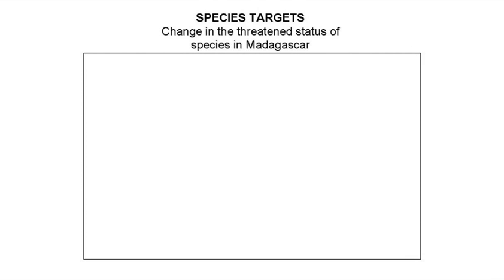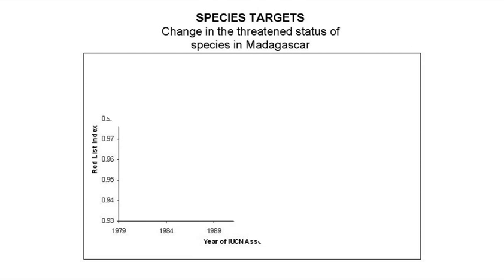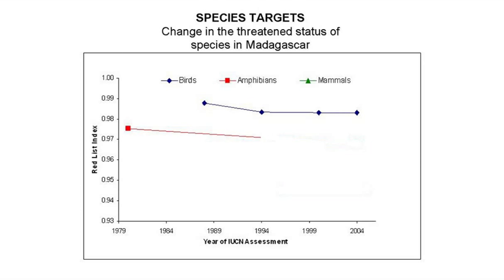First, we track whether globally threatened species are recovering or declining by monitoring their status on the IUCN Red List.